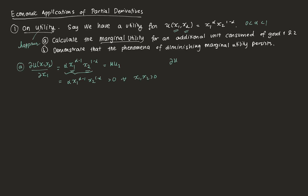The same holds for good 2. The marginal utility of good 2 is the partial derivative with respect to x2, which gives 1 minus alpha times x1 raised to alpha times x2 raised to negative alpha. This is the increase in utility for a change in good 2 holding good 1 constant. Since alpha is between 0 and 1, 1 minus alpha is positive, and this entire value is positive for all x1, x2 greater than 0. So those are the marginal utilities of good 1 and good 2.